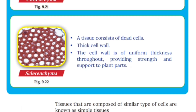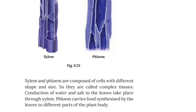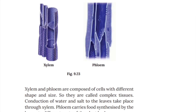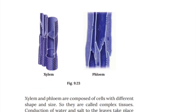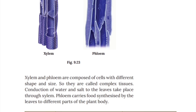The group of similar types of cells are known as tissue. Tissues composed of similar types of cells are known as simple tissue. Tissues composed of cells with different shape and size — such as xylem and phloem — are known as complex tissue.